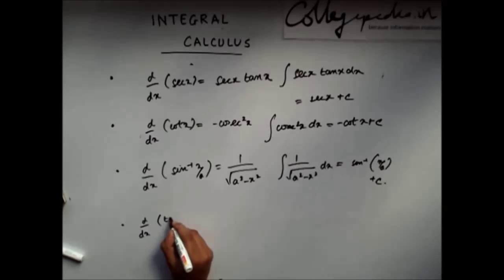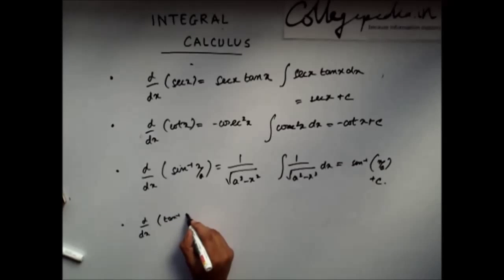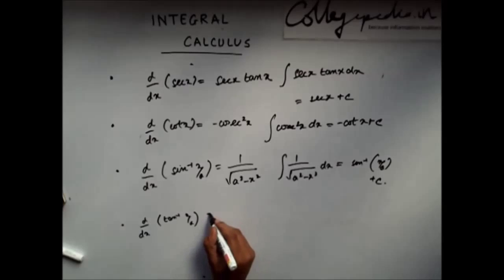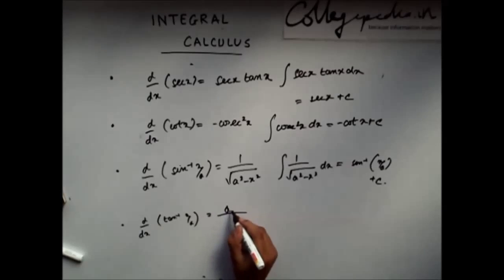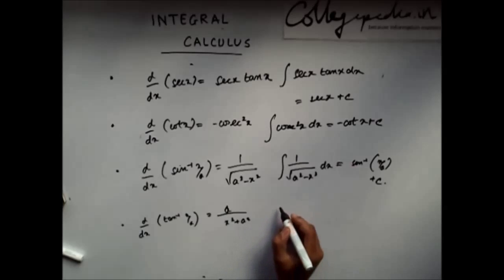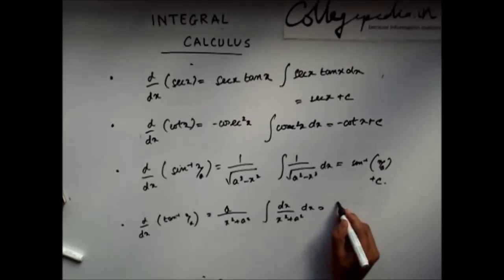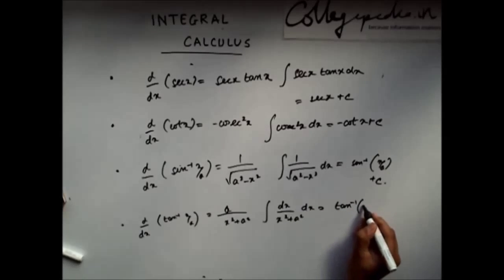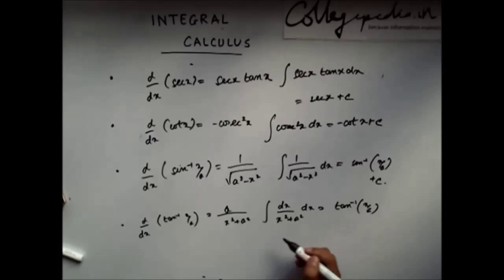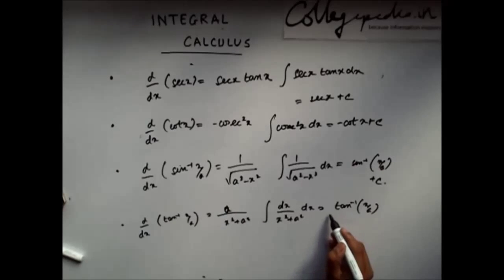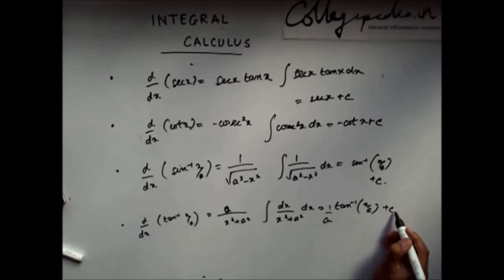Similarly, if I differentiate tan inverse (x/a), I get a divided by (x squared plus a squared). So, if I integrate that expression, since I had an a in the derivative, I need to divide by a, giving tan inverse (x/a) divided by a, plus some constant C.